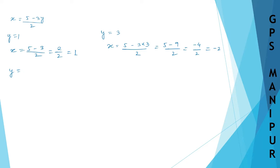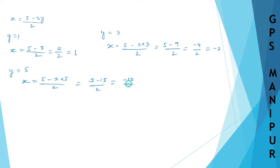For y is equal to 5: x is equal to 5 minus 3 into 5 divided by 2, which will be equal to 5 minus 15 divided by 2. That is minus 10 divided by 2, which is minus 5. So let us write down all this.